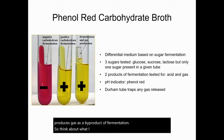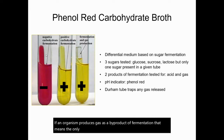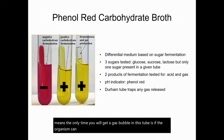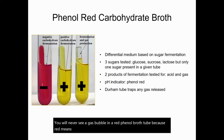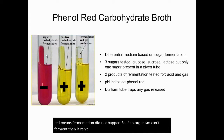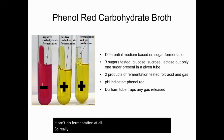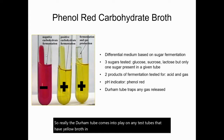If an organism produces gas as a byproduct of fermentation, that means the only time you will get a gas bubble in this tube is if the organism can ferment a sugar. You will never see a gas bubble in a red phenol broth tube, because red means fermentation did not happen. So if an organism can't ferment, then it can't release gas during fermentation, because it can't do fermentation at all.